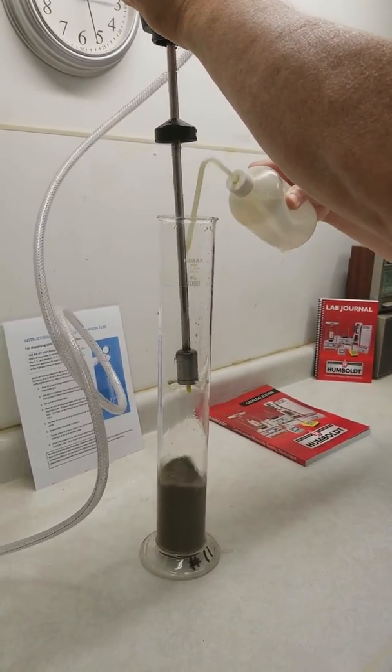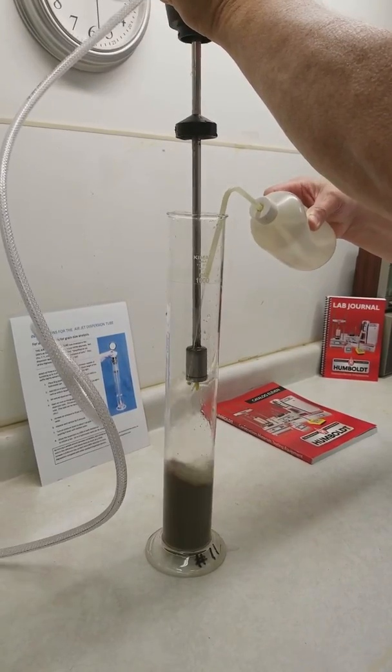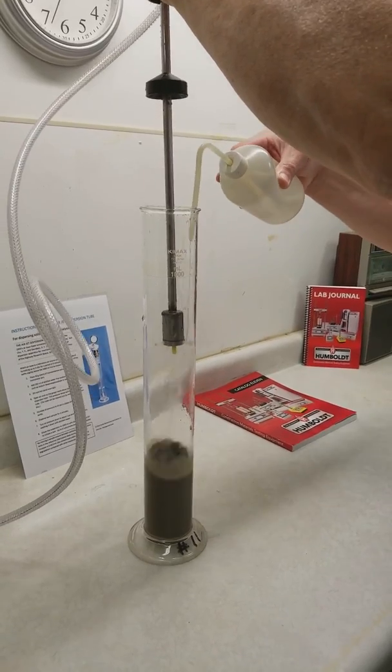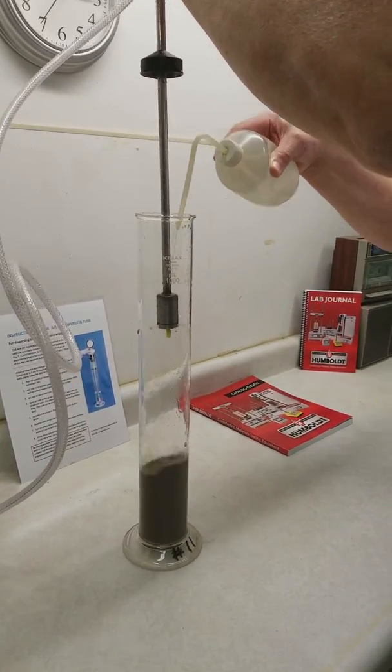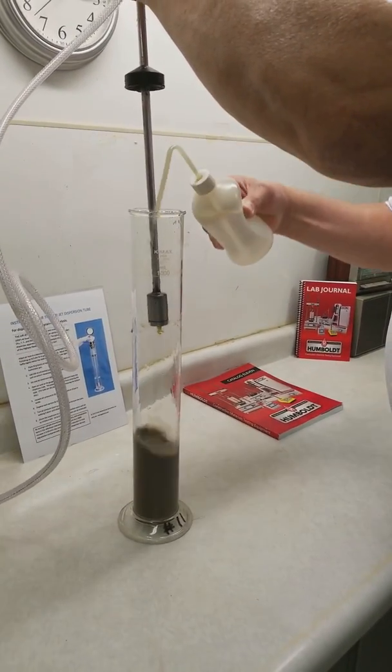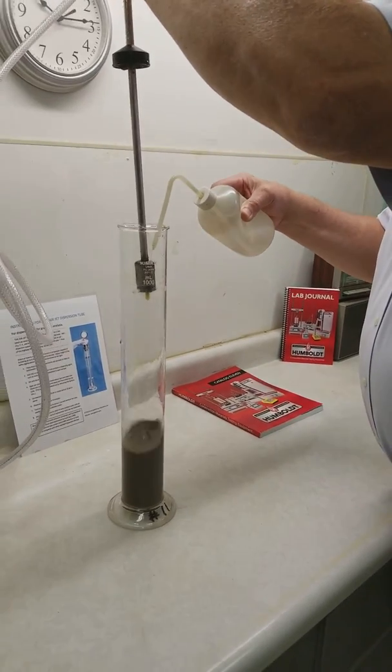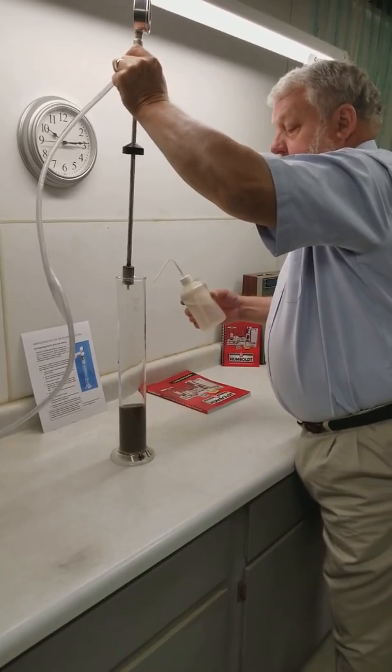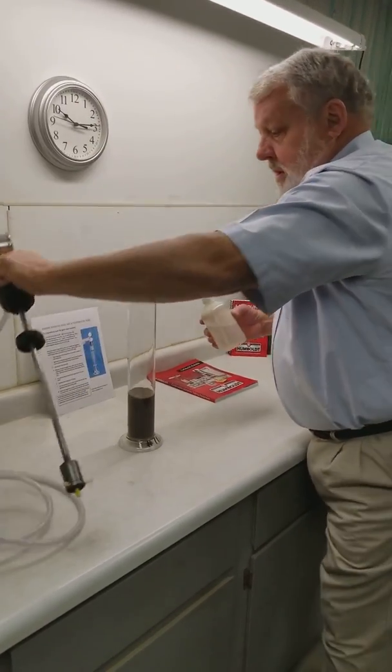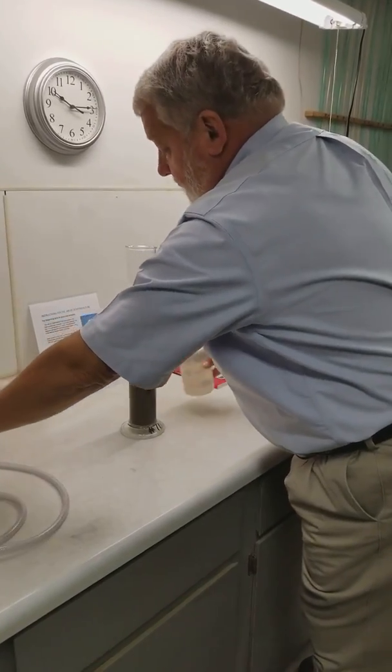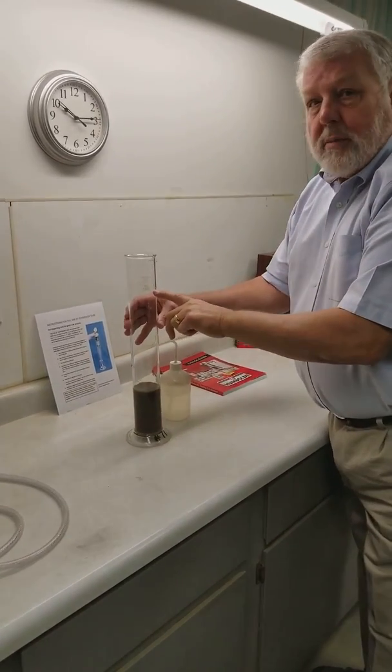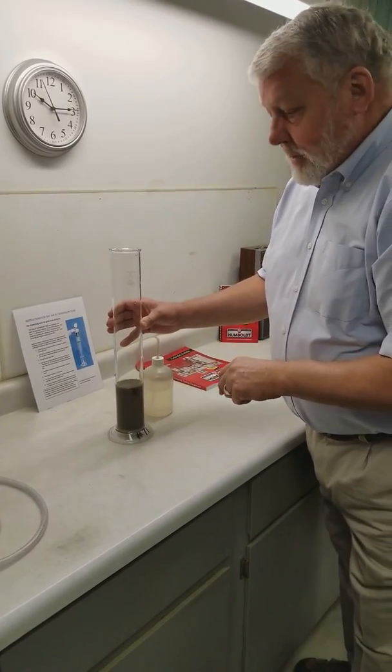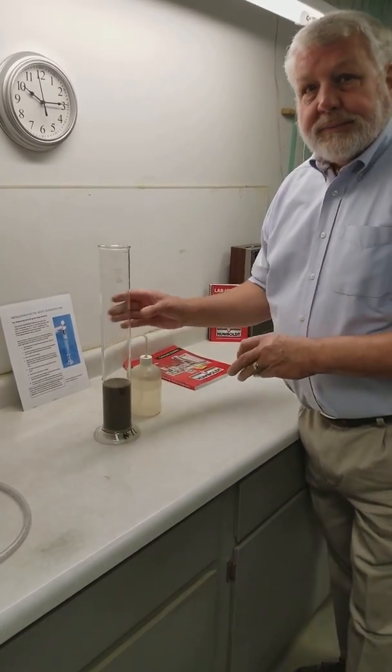It is important to make sure that we wash all soil particles off of the jet as we remove it from the jar and now we can turn the pressure off, remove the device from the jar, fill the jar to the thousand milliliter mark, shake for 60 seconds, set the jar back down on the table and we can start the hydrometer test. Thank you very much.